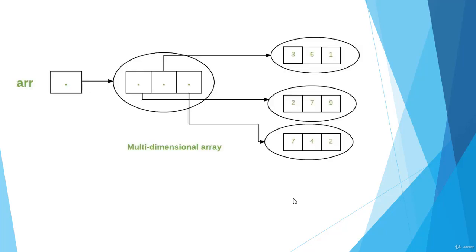In this diagram you can see that if we create a two-dimensional array, we first create a reference called ARR. After that we have an array which contains three boxes, and each box contains the reference of a different array. In this 2D array we give three and three in the two square brackets, so we get an array of size three where each box holds a reference to a separate array. This is how we create the multi-dimensional array.